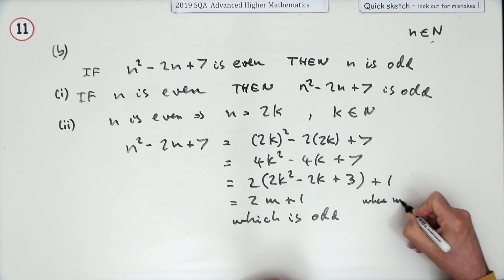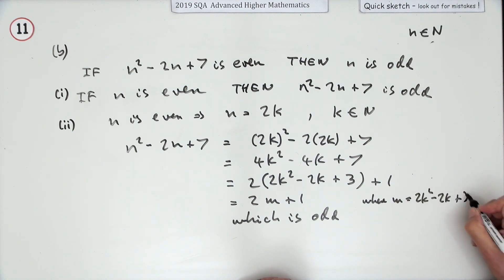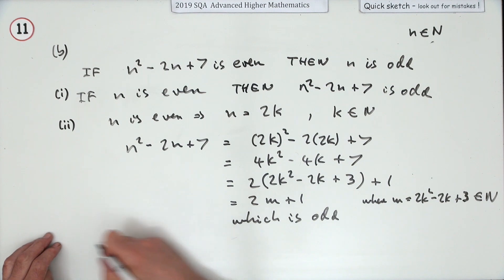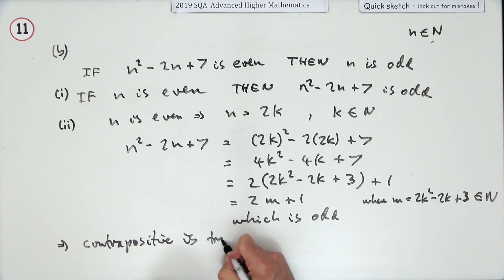Where m equals 2k²-2k+3, which obviously is still a member of the positive integers or natural numbers. Following on from that, you would say the contrapositive is true, which means the original statement is true.